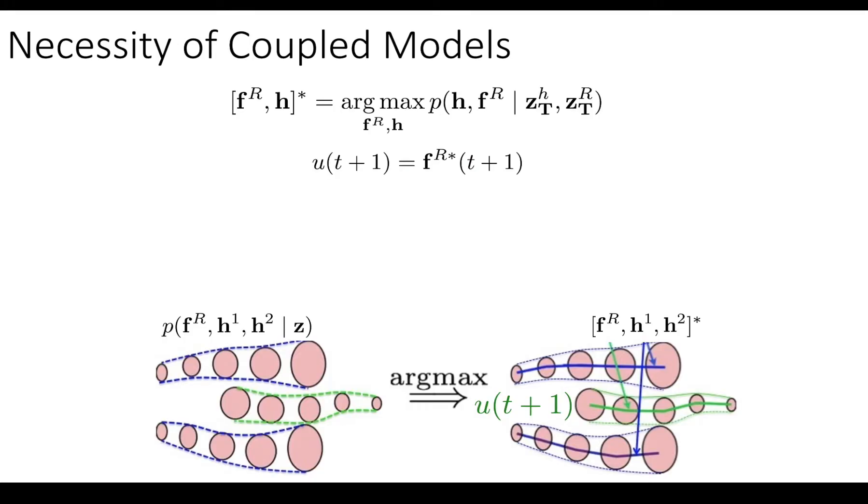So what that leads us to is the necessity of coupled models. And you might couple your model or model interaction in a number of different ways. For us, we're going to consider joint probability distributions. In this case, we're labeling it P of H and FR, where H is the human and FR is the robot. And H can expand and contract as more people enter or leave the scene. And then we look at the joint argmax of that distribution, and we take the next step in the control cycle to be the next step in the robot's argmax trajectory.